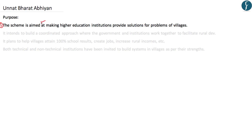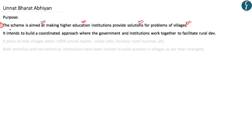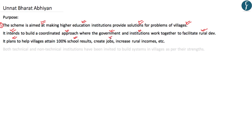The scheme intends to build a coordinated approach where the government and institutions work together to facilitate rural development. Through this coordinated approach, the scheme plans to help villages attain 100% school results, create jobs, and increase rural income, among other factors. Both technical and non-technical institutions have been invited to build systems in villages as per their strengths.